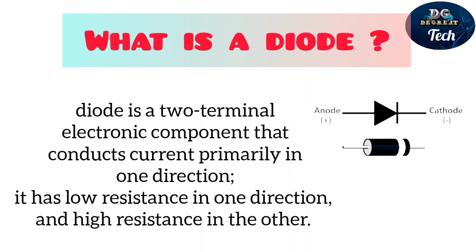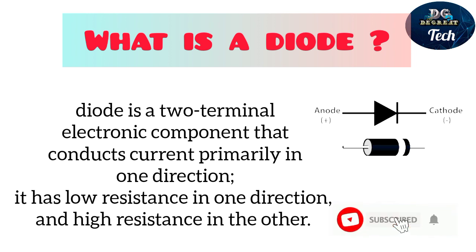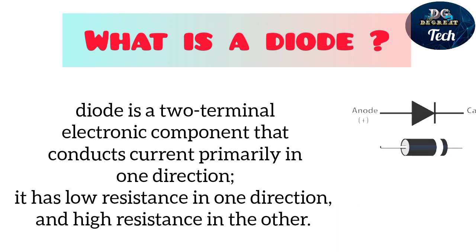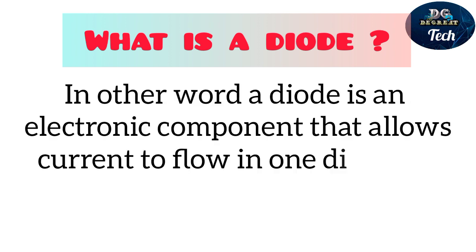Number four: the diode. A diode is a two-terminal electronic component that conducts current primarily in one direction. It has low resistance in one direction and high resistance in the other. In other words, a diode is an electronic component that allows current to flow in only one direction.